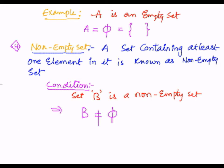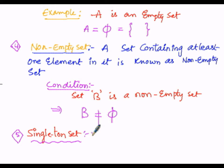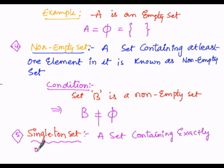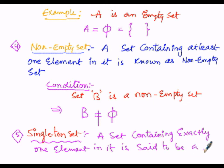The fifth fundamental concept is the singleton set. A singleton set indicates a set containing exactly one element in it. It must have only one element; then it is said to be called a singleton set. A set containing exactly one element in it is said to be a singleton set.